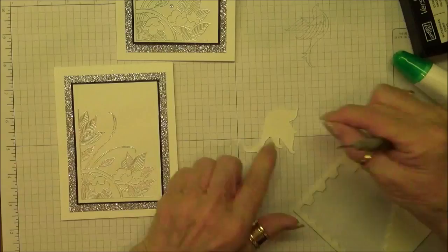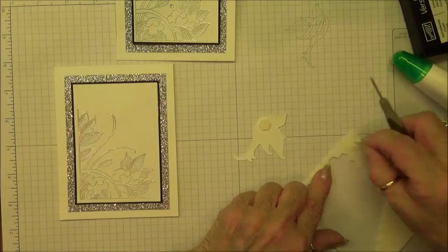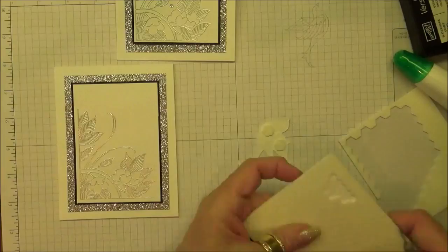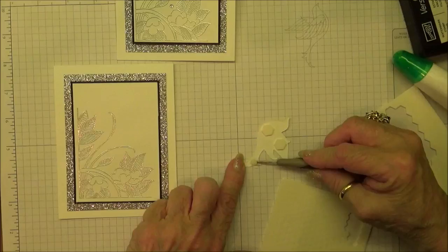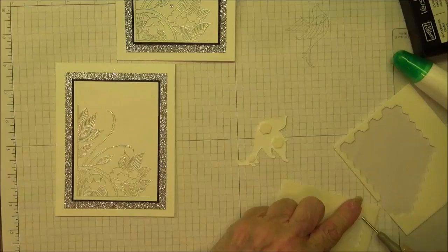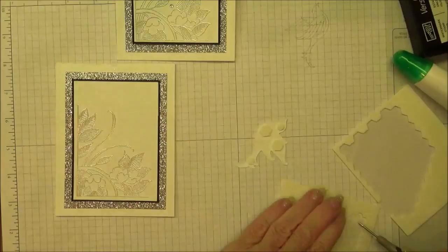I'm going to use a combination of our regular and our mini dimensionals to hold this up, lift it off of the page. I really like our new mini dimensionals. They came out last year and they're just so nice because they enable you to get into small areas. Yes, you can take a big dimensional and just cut it up, but this is nice because you don't have to. You can get all of these little tiny areas elevated.